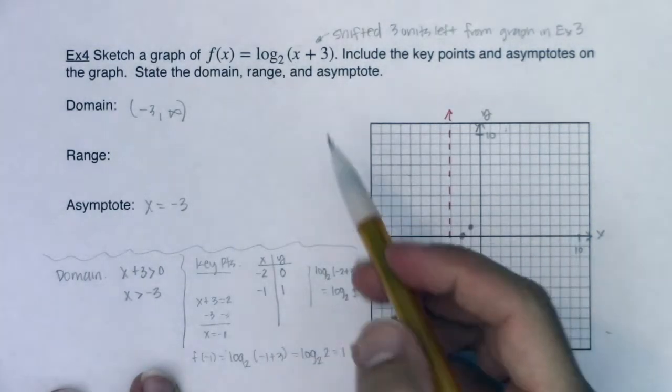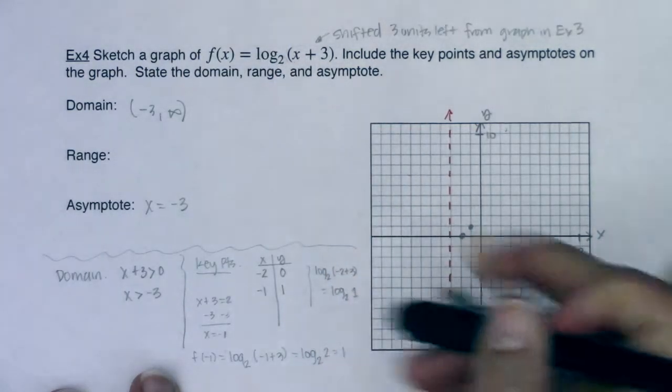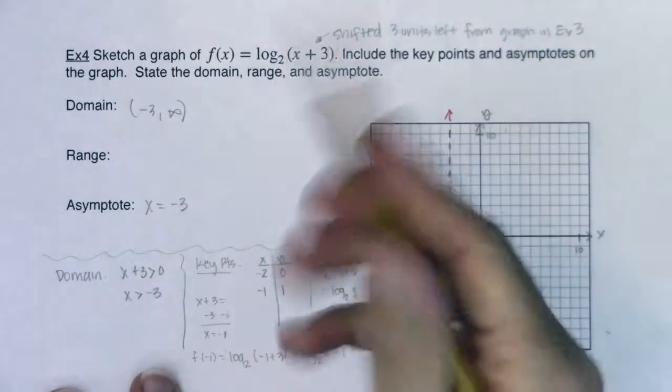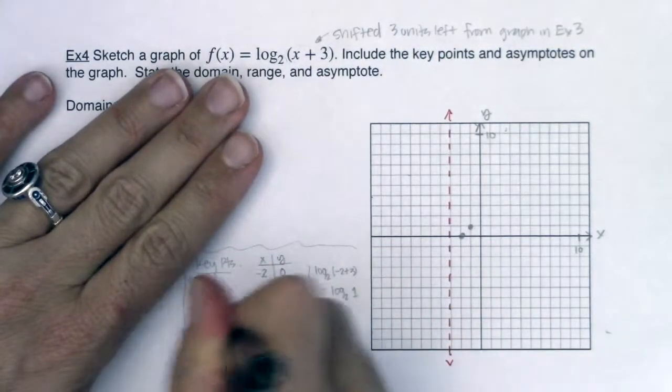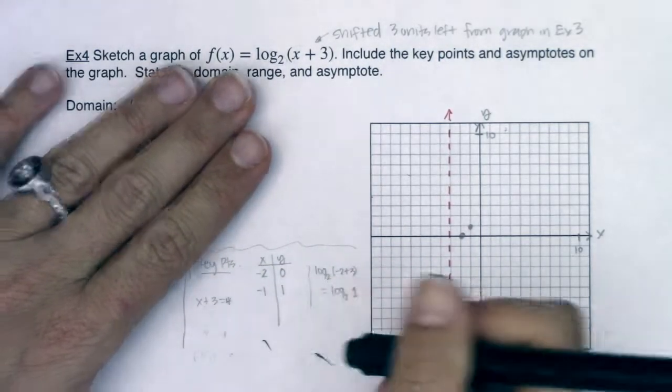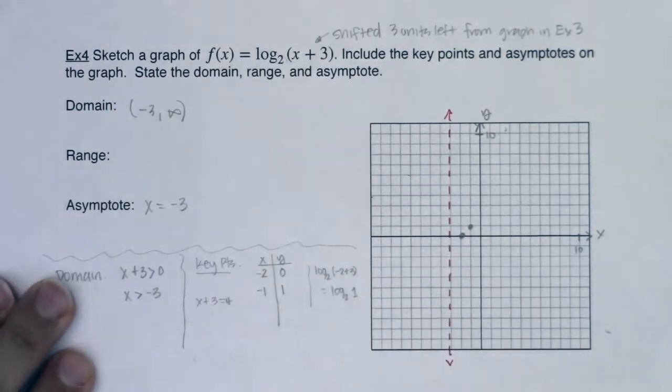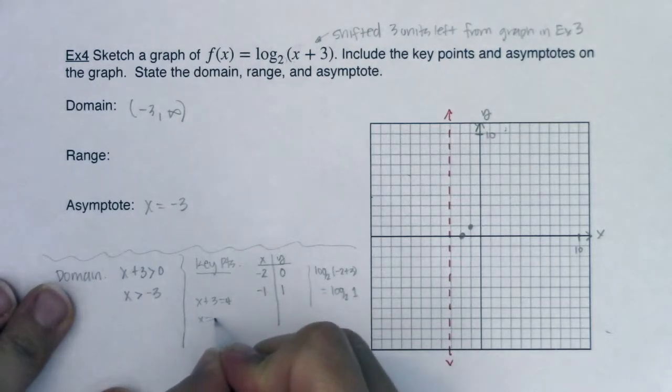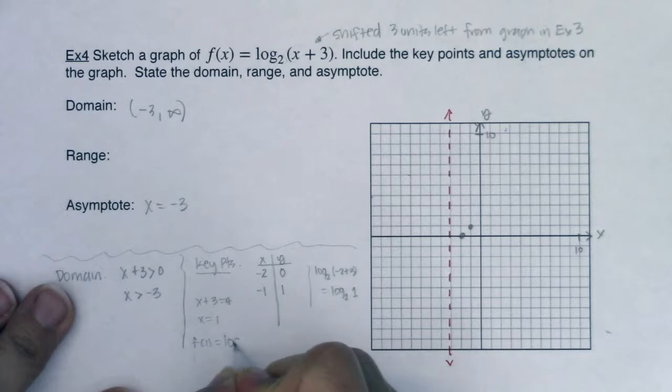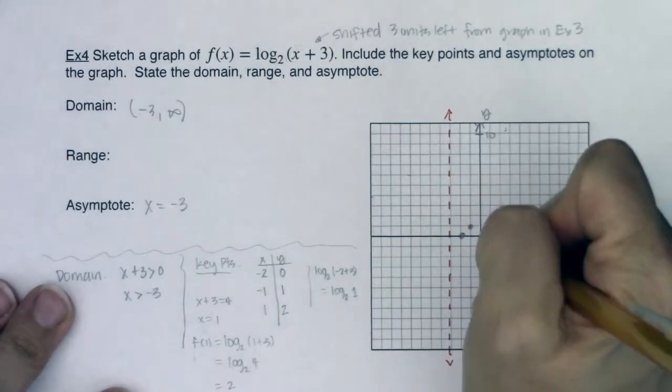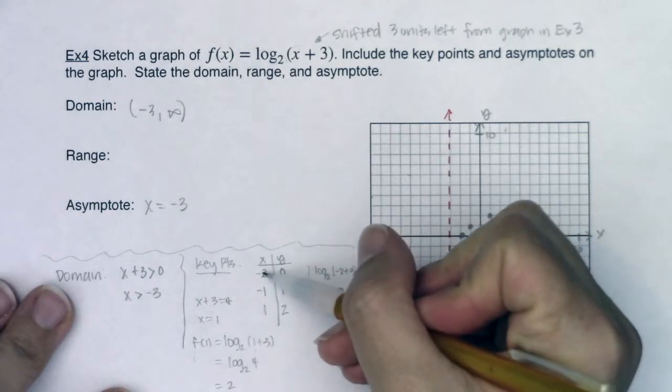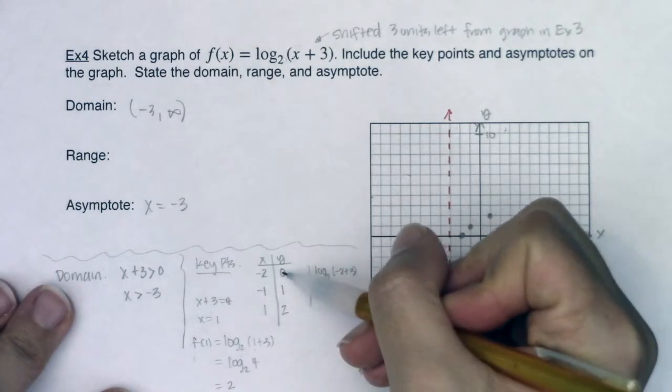I would also, again trying to keep with this, if my base is 2, I would like my arguments to be powers of 2. Let me let x plus 3 be equal to 4 this time. So now I'm letting it equal 4 because 4 is a power of 2, so x would be equal to 1. So f of 1 will be log base 2 of 1 plus 3. That would be log base 2 of 4. And the exponent you need on 2 to get to 4 is 2. So when I plug 1 in, I get 2 back out. So 1, 2. And you can see that I'm choosing these x values intentionally so that my y values become nice integers.